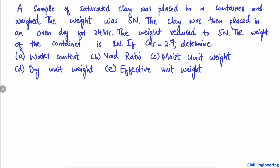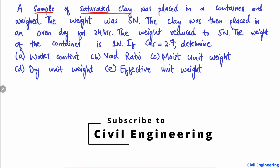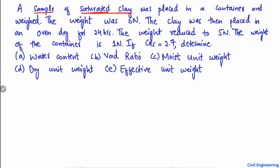In this problem we solve out the different unknown parameters for a soil sample. The problem states that a sample of saturated clay — keep in mind that it is a saturated clay, I will explain this later — was placed in a container and weighed; the weight was 6 Newton. The clay was then placed in an oven and dried for 24 hours, and the weight reduced to 5 Newton. The weight of the container is 1 Newton. If the specific gravity Gs is 2.7, then determine the water content, the void ratio, the moisture unit weight, the dry unit weight, and the effective unit weight for the soil sample.